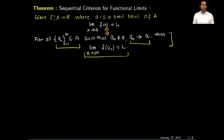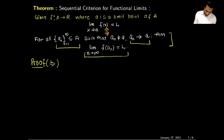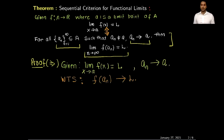Since this theorem has an if-and-only-if condition, we will prove the two parts of this theorem. First we will prove the forward direction and then the backward direction. To prove the forward direction, given is: the limit as x approaches a of f(x) equals l, and the sequence a_n converges to a. We want to show that the limit of the sequence f(a_n) is also equal to l.